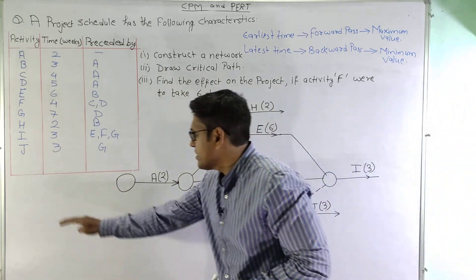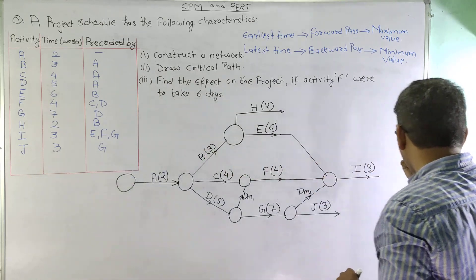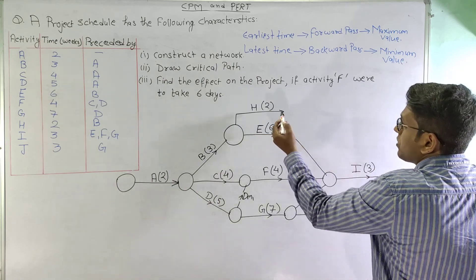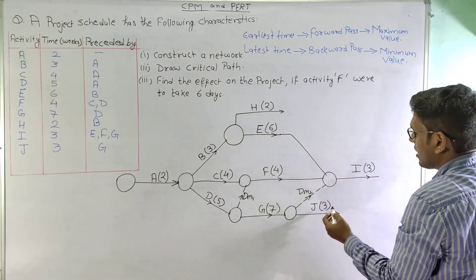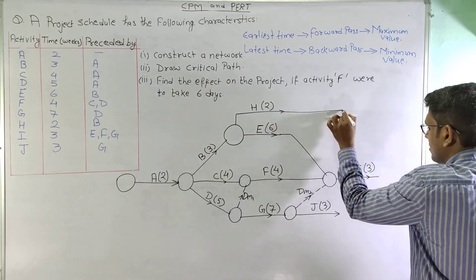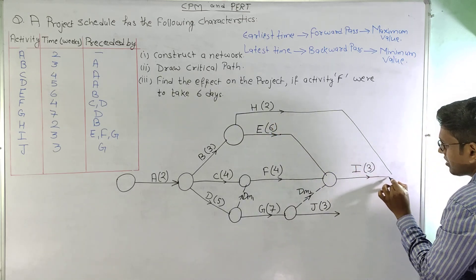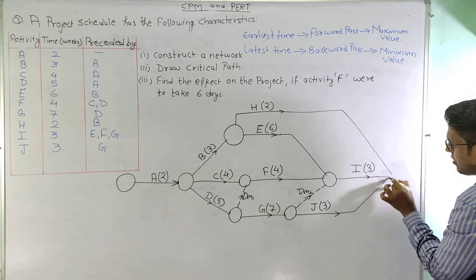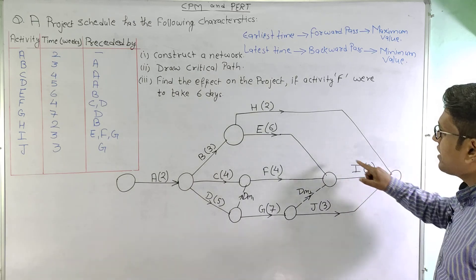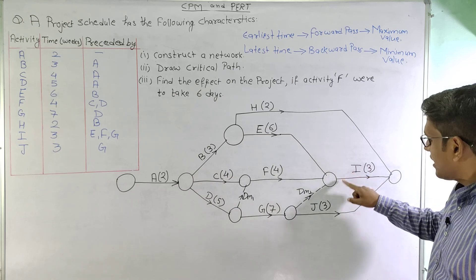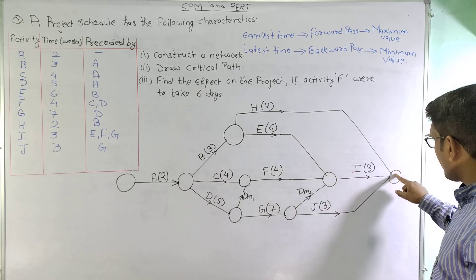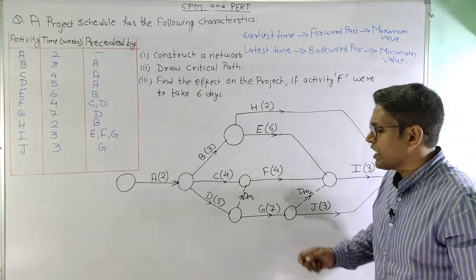Now that all activities are placed, we check which activities are still open: H, I, and J are open. So we converge H, I, and J to a single finishing node. This completes our network diagram.